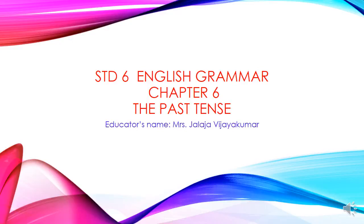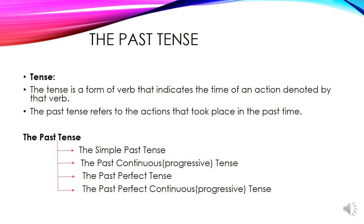Hello children, let us start a new lesson in English grammar, chapter number 6, the past tense. You know, tense is a form of verb that indicates the time of an action denoted by that verb. Tense shows the time of action. The past tense refers to the actions that took place or happened in the past.